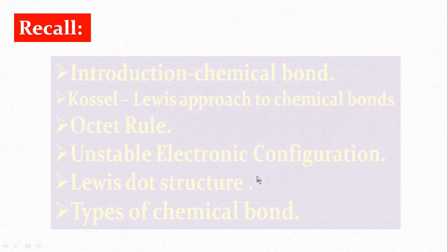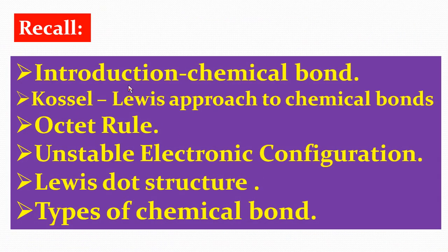Now let us recall what we learnt in the previous classes: Introduction of Chemical Bond, the Lewis Approach to Chemical Bonds, the Octet Rule, Unstable Electronic Configuration, Lewis Dot Structure, and the Types of Chemical Bond.